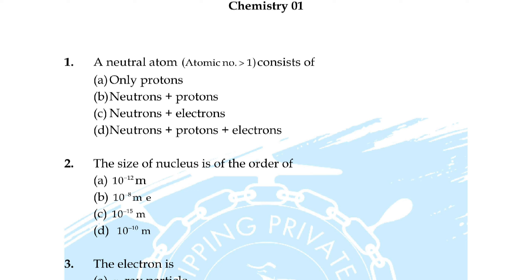Question number 15: water at its freezing point in a closed insulated vessel represents — option A: open system, B: heterogeneous system, C: closed system, option D: homogeneous system. Correct answer is option B: heterogeneous system.